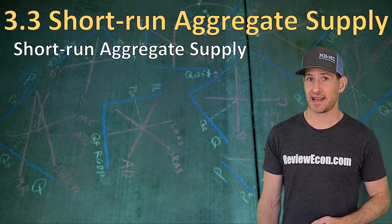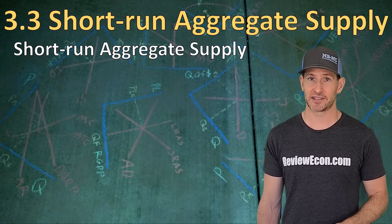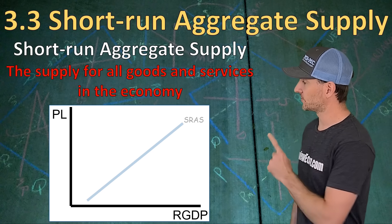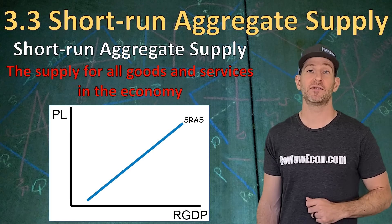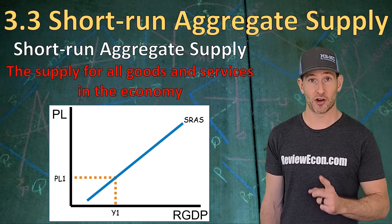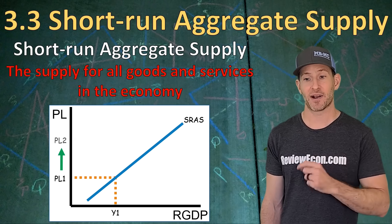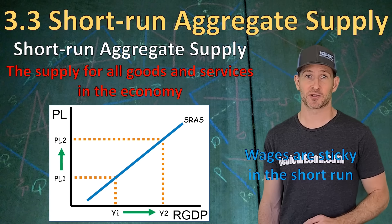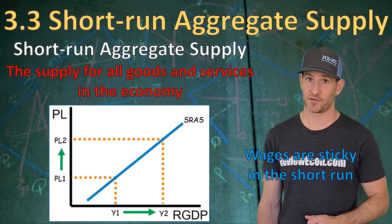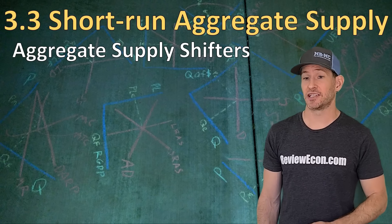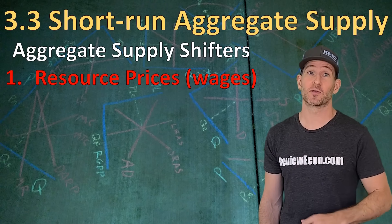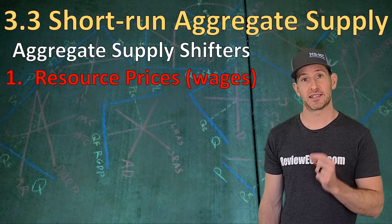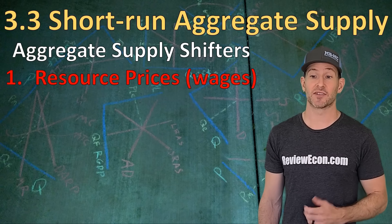The next thing you need to know for the AS-AD model is the short-run aggregate supply curve — the supply curve for all goods and services within the economy. In the short run, we have a direct relationship between the price level and the quantity of goods and services produced: at low prices we have low quantities of output, and at high prices we have higher quantities of output. The reason for that relationship is that wages and other resource prices are sticky in the short run. There are five short-run aggregate supply curve shifters. The first is resource prices, often wages. When resource prices increase, the SRAS shifts to the left; when they decrease, it shifts to the right.